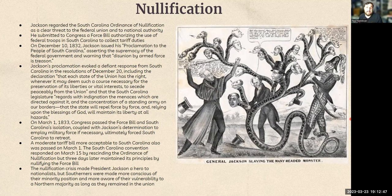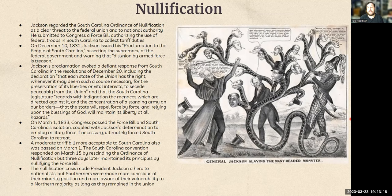South Carolina is not going to back down. They respond saying each state has the right, whenever it deems necessary for the preservation of its liberties, to secede peaceably from the union, and that the South Carolina legislature regards with indignation the threats directed against it. They're saying: we read your letter, we see what you're trying to do, you're trying to intimidate us and we won't take it. We're not going to back down just because you have an army on our borders — we will fight right back. Ultimately, in March 1833, Congress passes that force bill Jackson asked for, and he starts mobilizing troops around South Carolina.